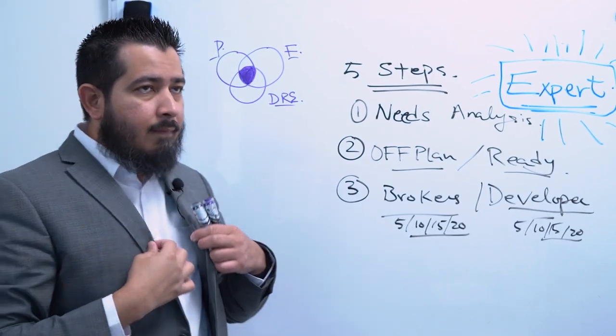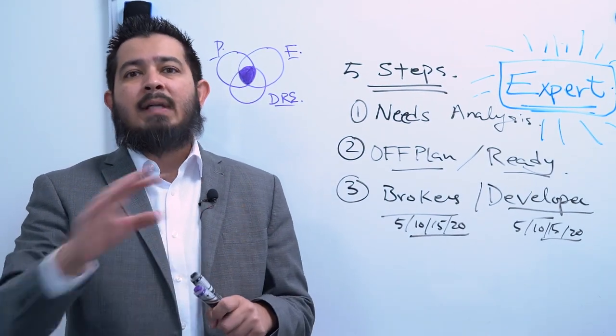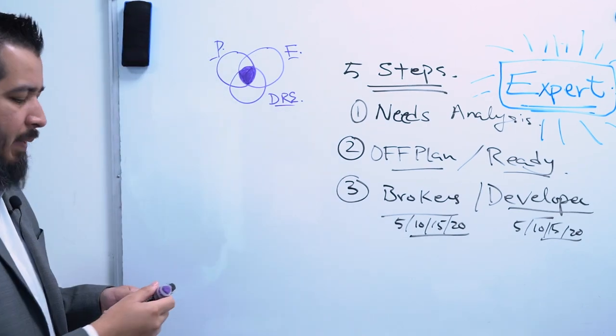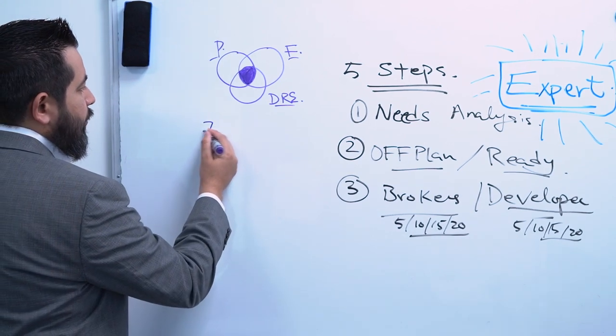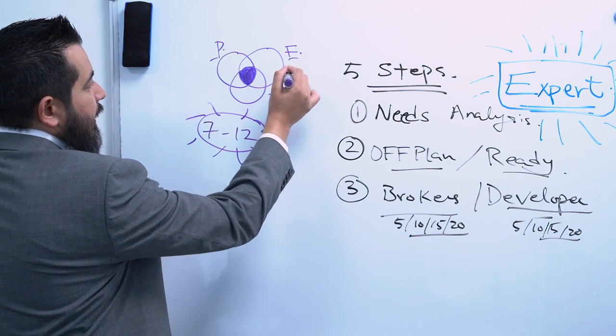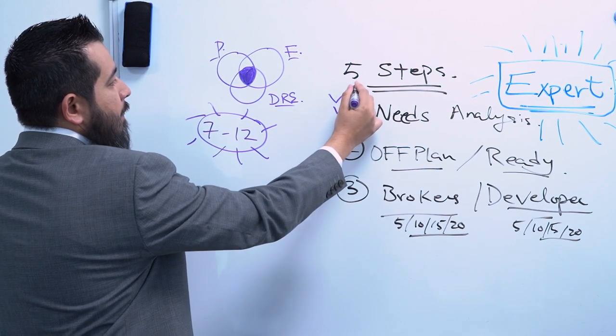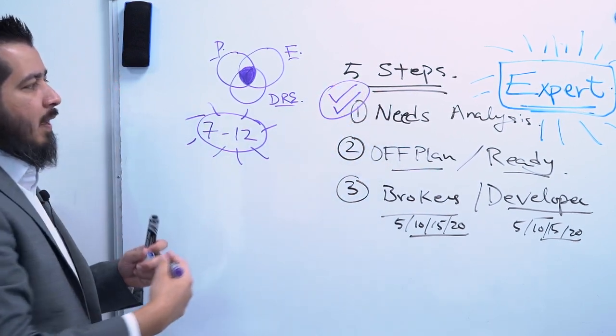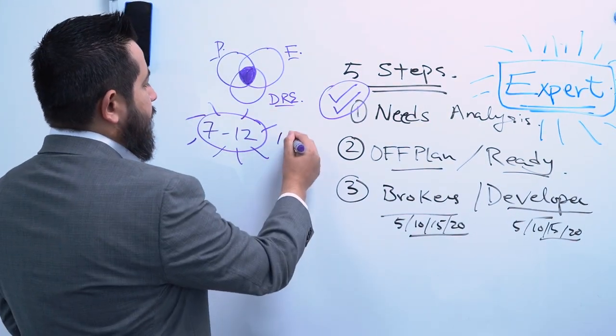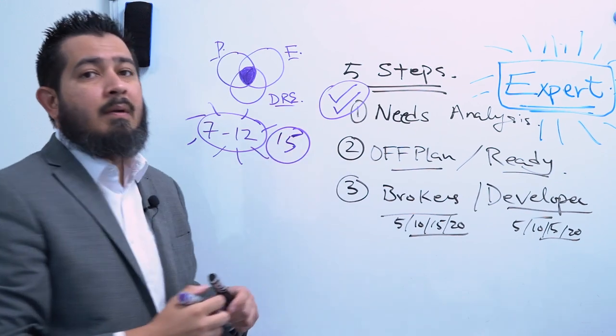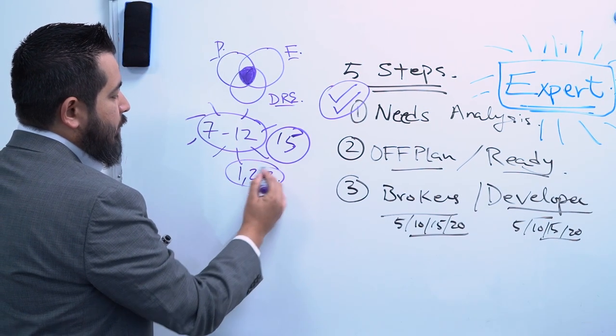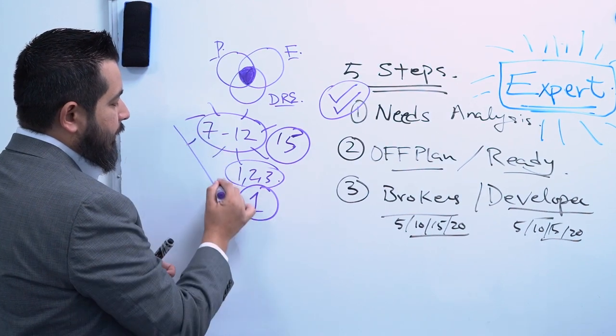But sometimes, you know, I'll tell you something, I as an expert would be able to guide you into the process and I can bring you one or two properties that just make sense. But sometimes I'll still go through 7 to 12 properties just to make sure what I've done with you in the needs analysis makes sense. Because until you sometimes see what's available, you might not be able to make the right call. So, we'll still look at 7, 12, sometimes 15 properties, just to make sure that we're in the right direction. We'll whittle it down to 1, 2, or 3, and from this, we'll whittle it down to 1 property. That's the process.